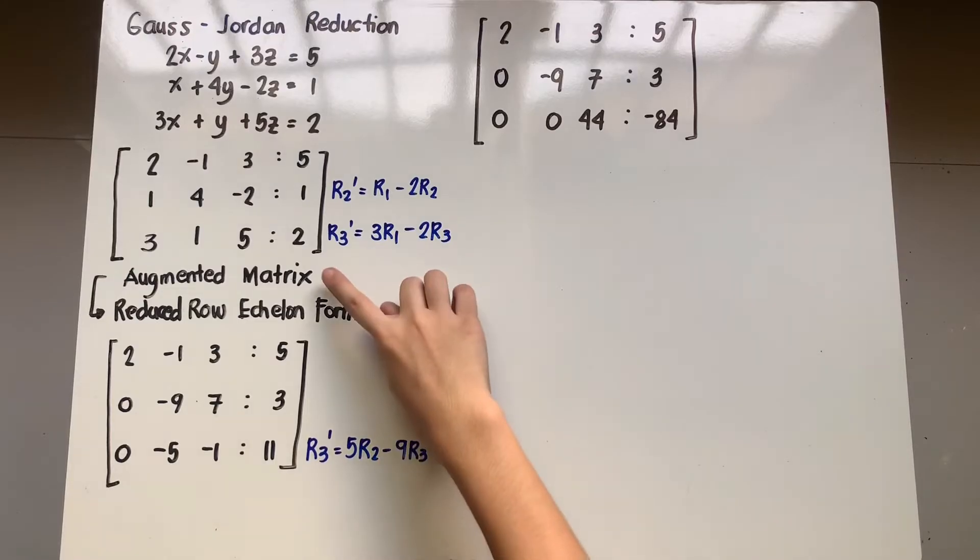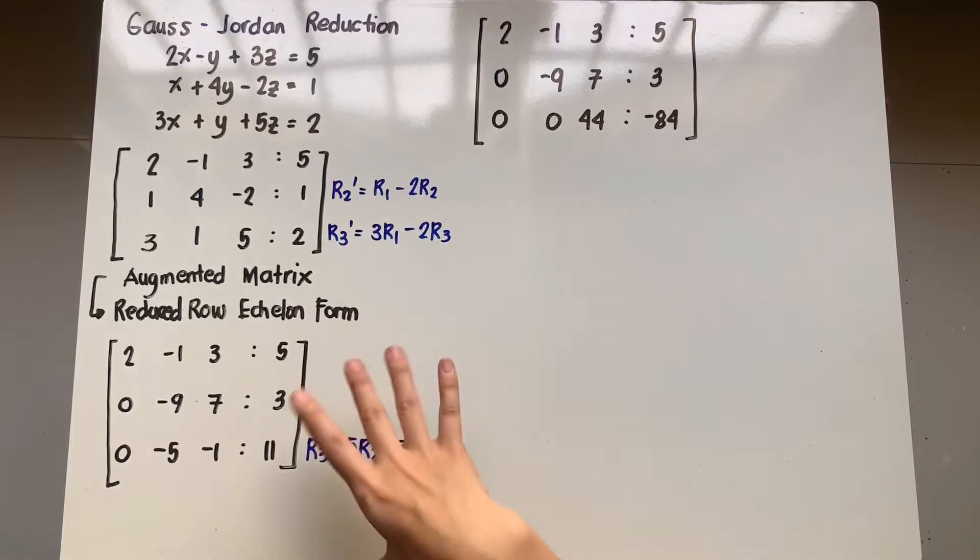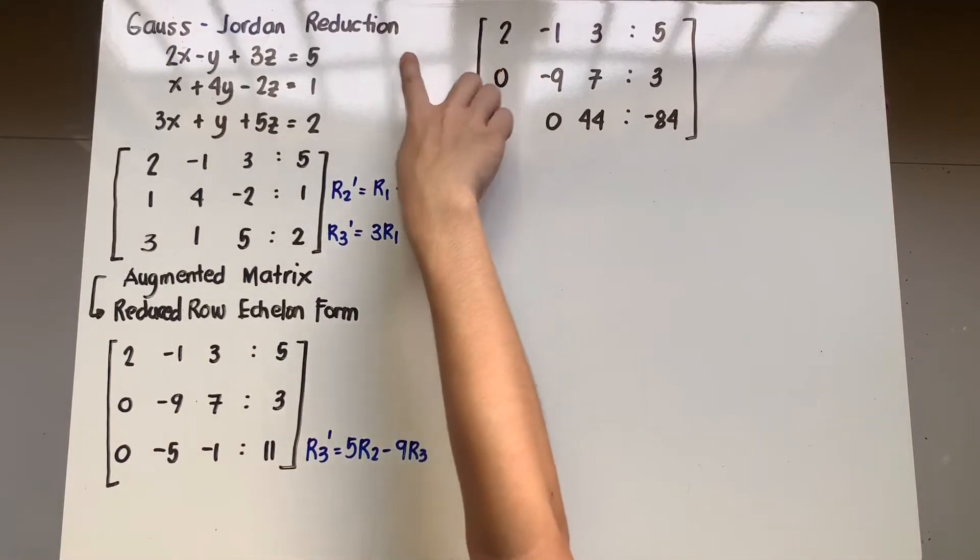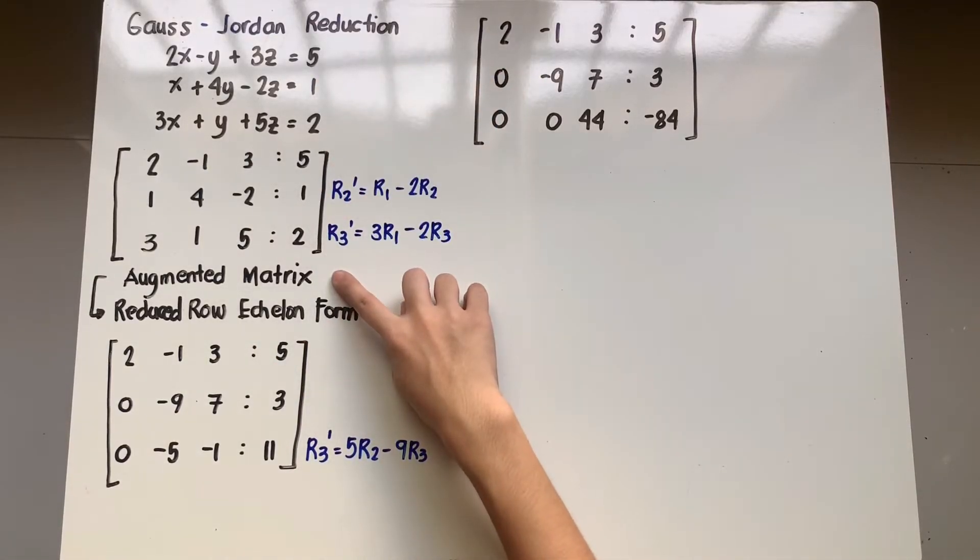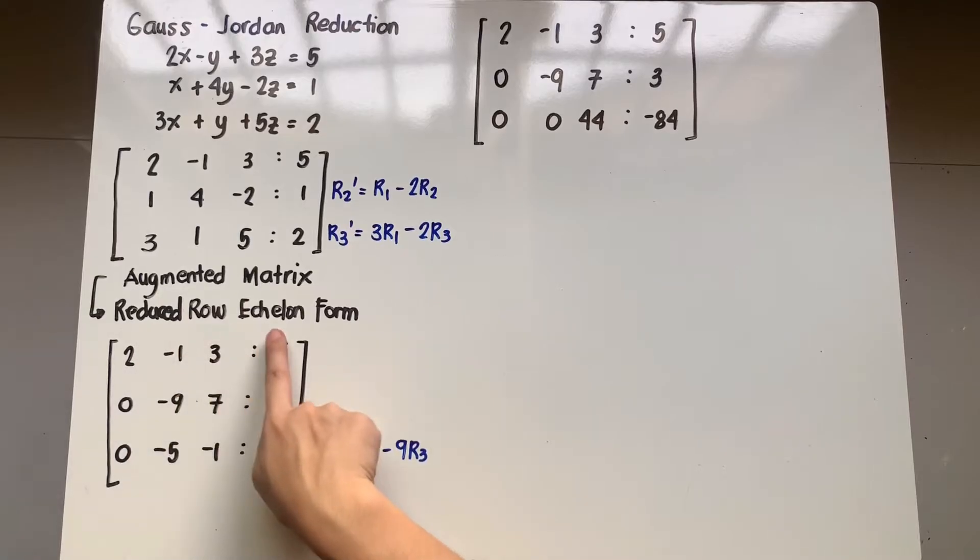Specifically that from an augmented matrix instead of transforming to a row echelon form, this time under Gauss-Jordan reduction, the augmented matrix will be transformed to a reduced row echelon form. And what's the difference?